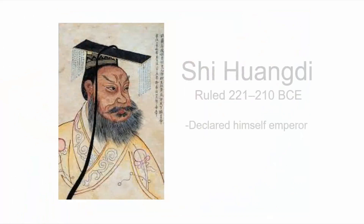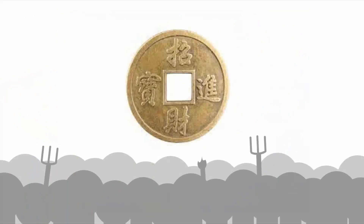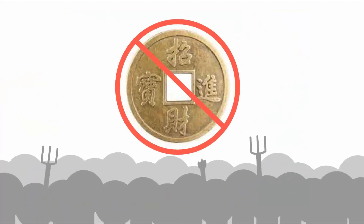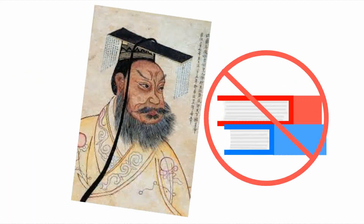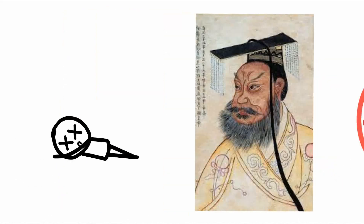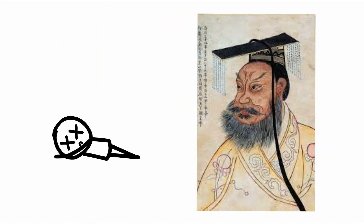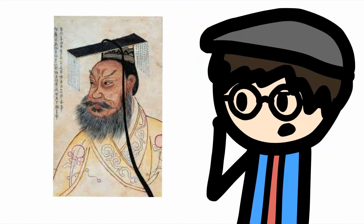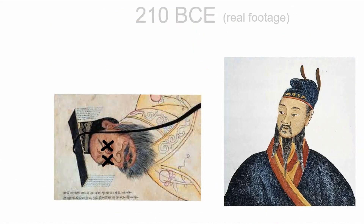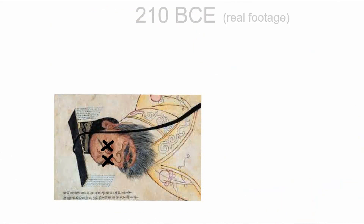Someone named Shi Huangdi declared himself emperor and was not liked very much within the dynasty. Basically, people didn't like paying the taxes he gave them, and he banned certain books about other kinds of government and executed people. Not the best first leader in my opinion. Once Shi Huangdi died in 210 BCE, his son tried to take over, but he was kicked out quickly. This led to the dynasty ending in 206 and being replaced with a new one.